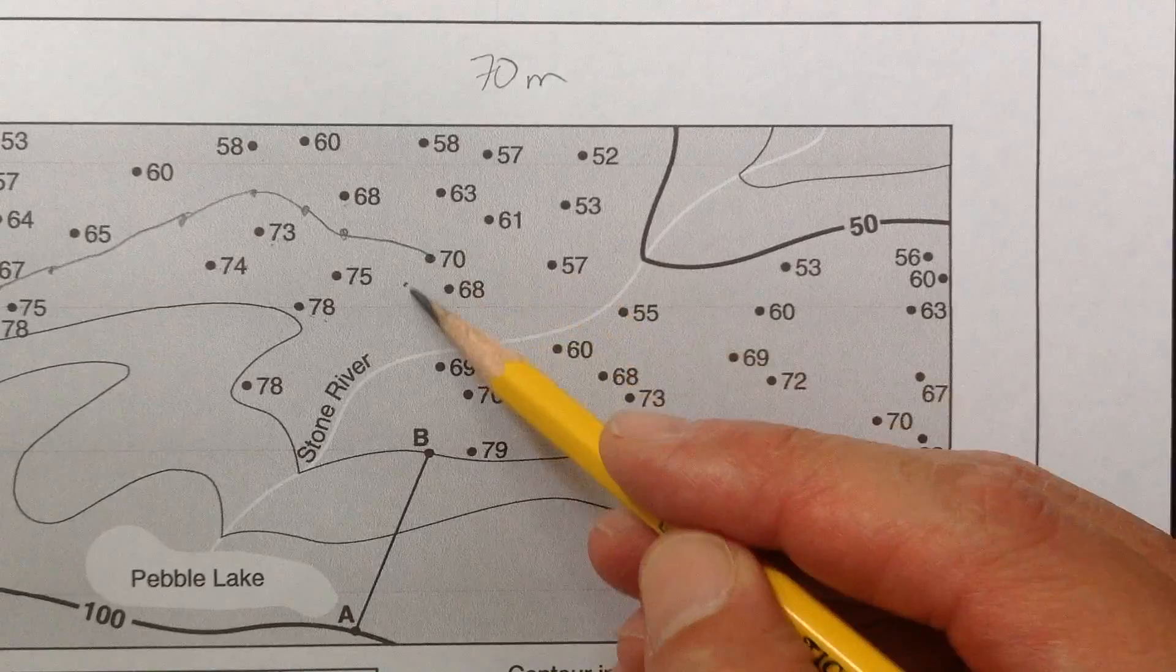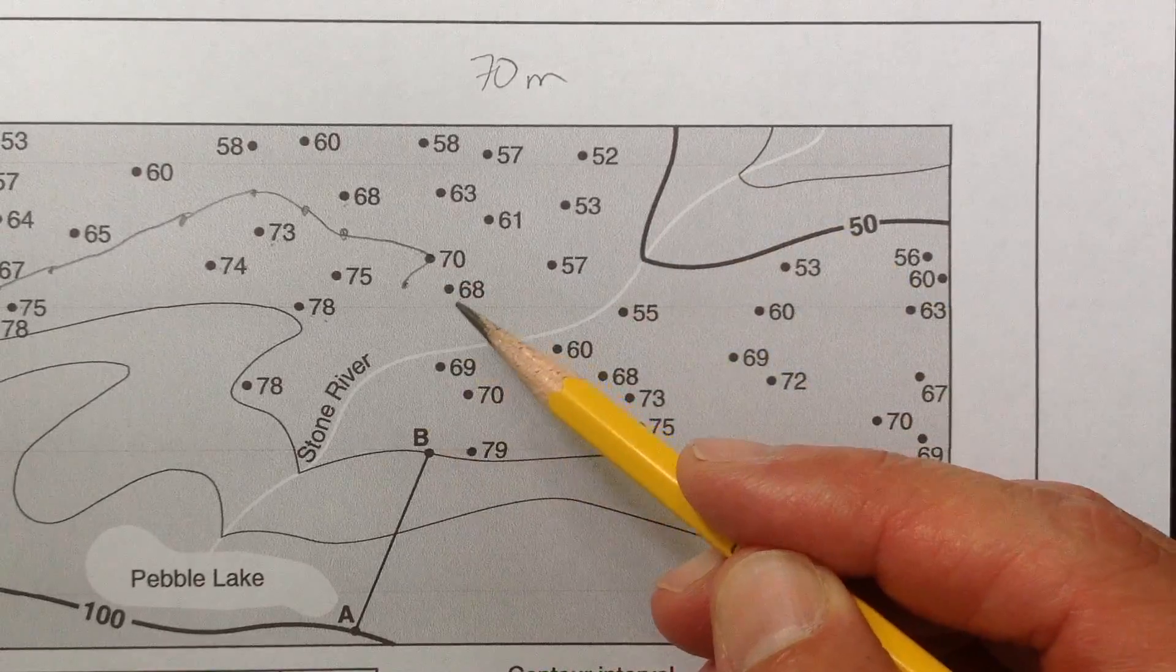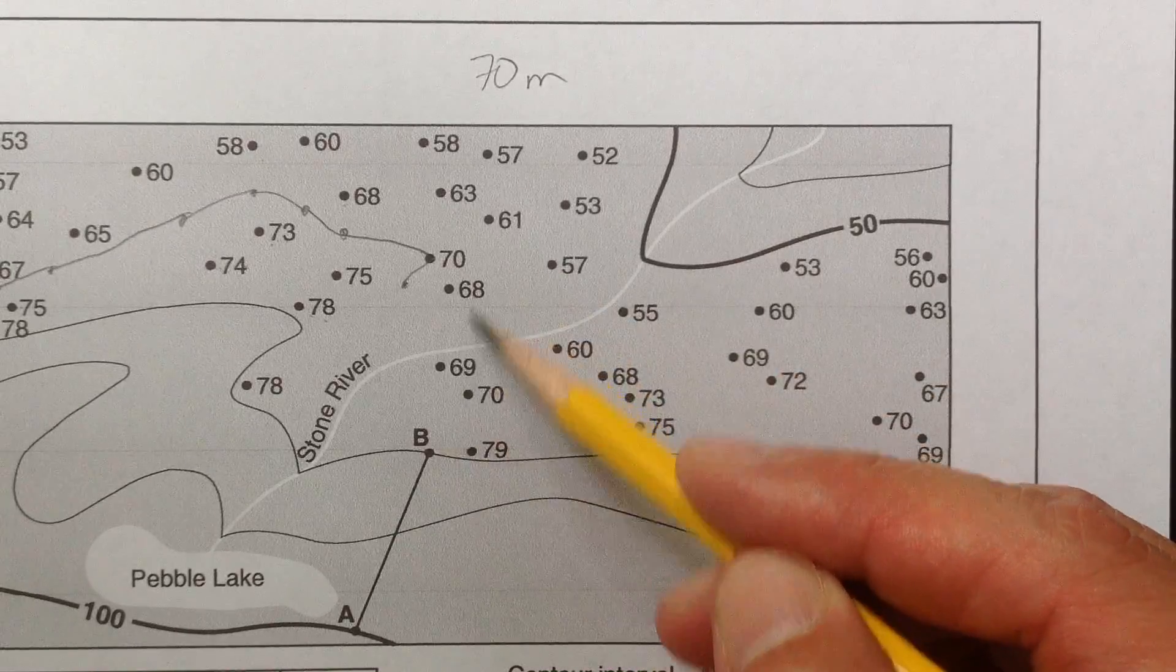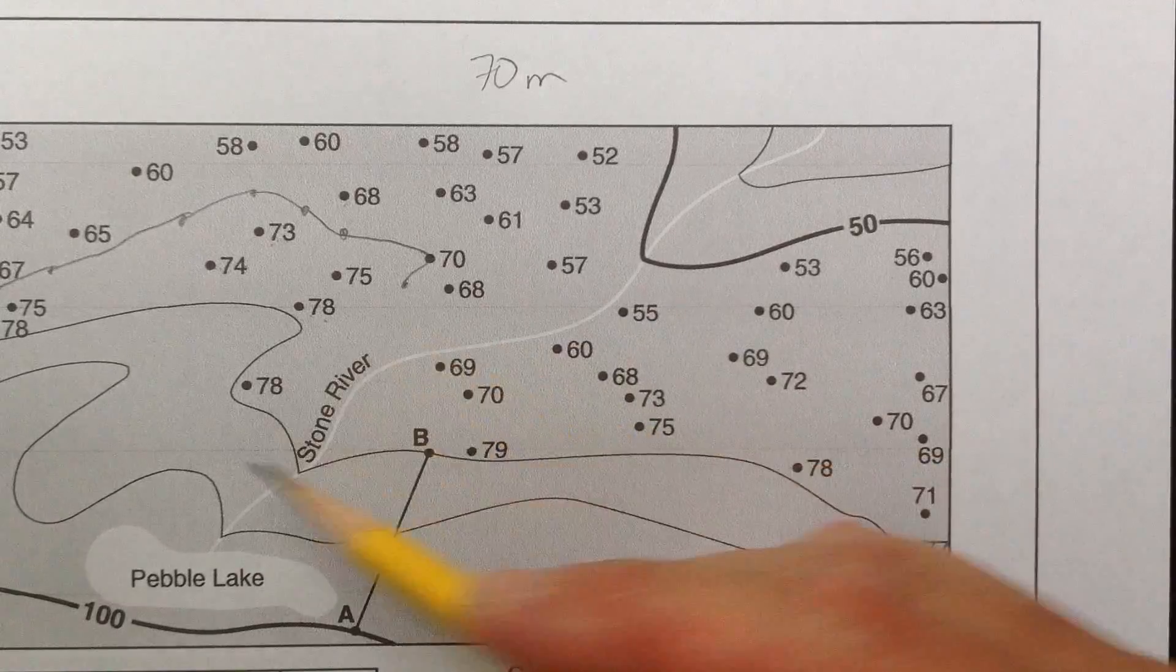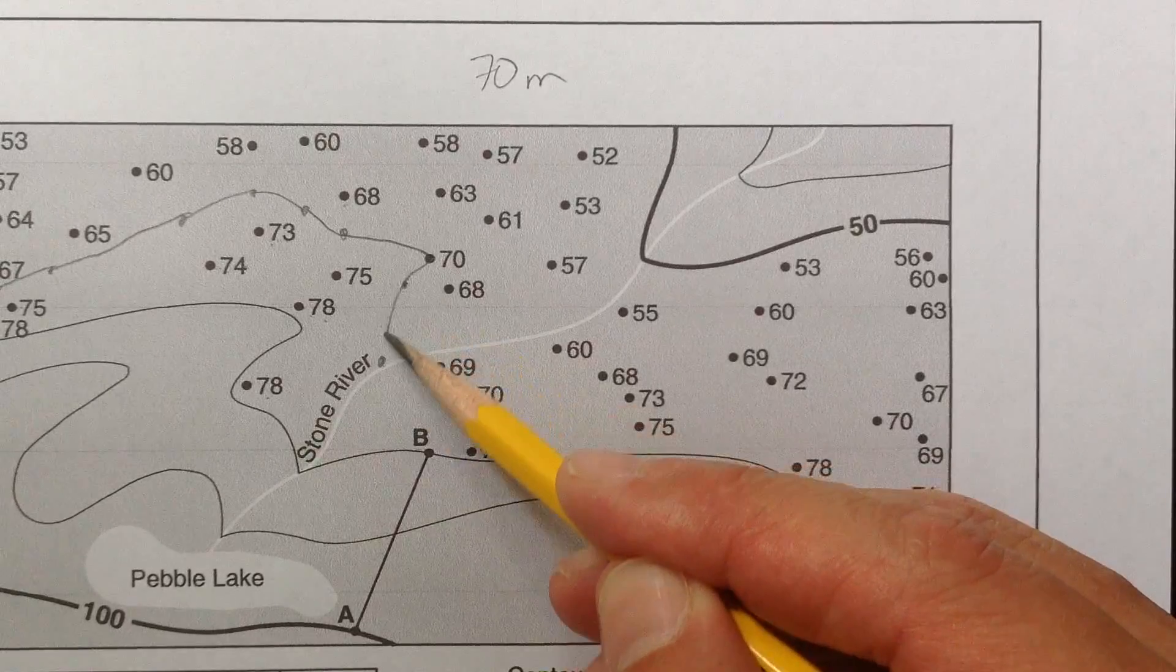So I'm kind of going back down this way, going to here. And then where's the next 70? These are not here. It's here. But how do I get there? Do I go this way or this way? And I see this is 78 and 69, so 70 is like here. I'm going there.